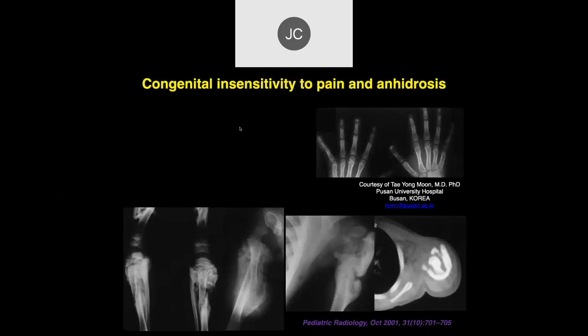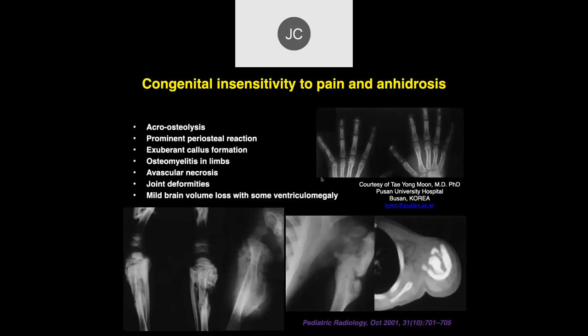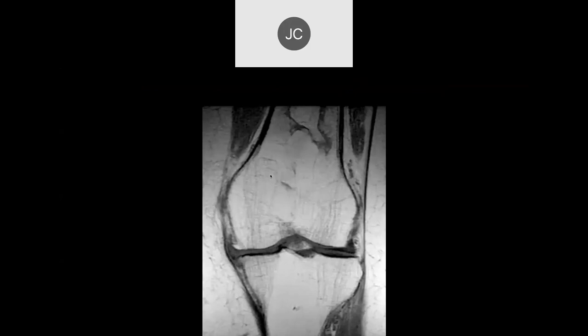Other examples of this same phenomenon show clubbing and resorption of the distal phalanges, also typical in this condition. The findings include acro-osteolysis, prominent periosteal reaction, exuberant callus formation, and superimposed infections, leading to joint deformities.